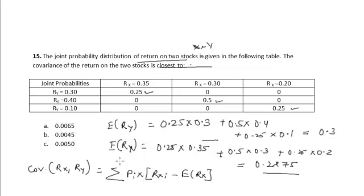have calculated over here, times the return on stock Y for that state minus the expected return on stock Y which we have calculated here. i is equal to 1, 2, 3, so this is state 1, 2, and 3.